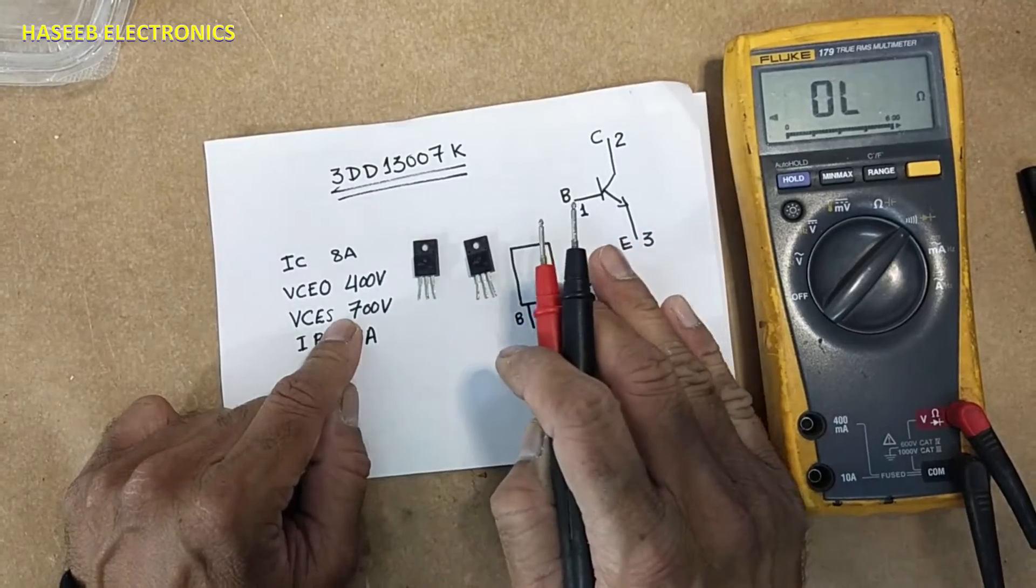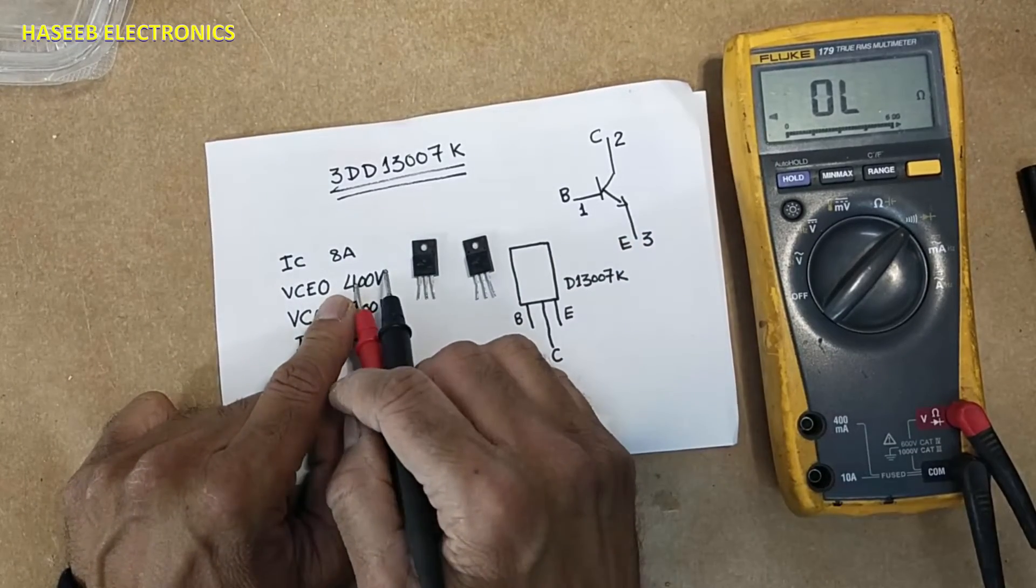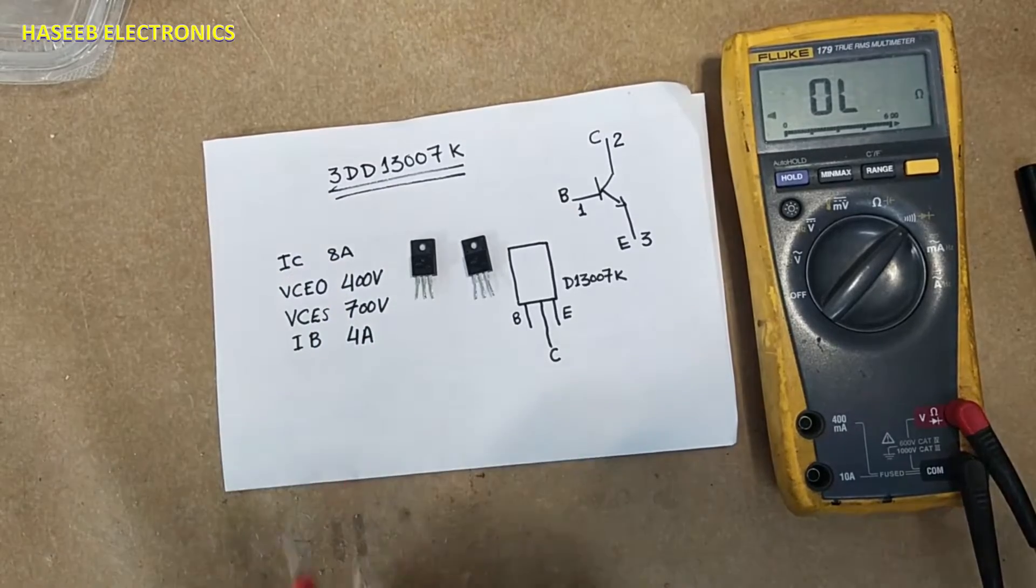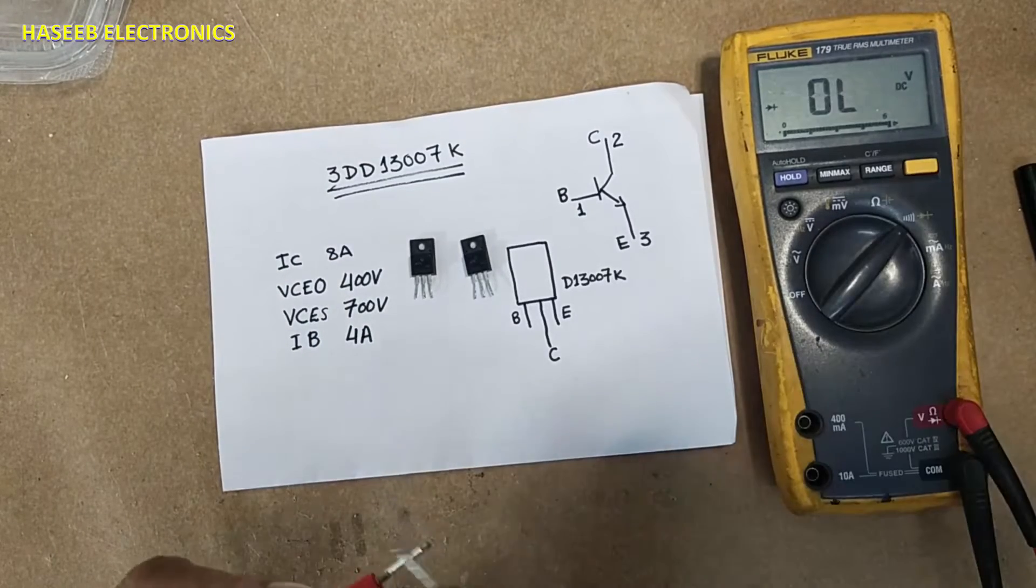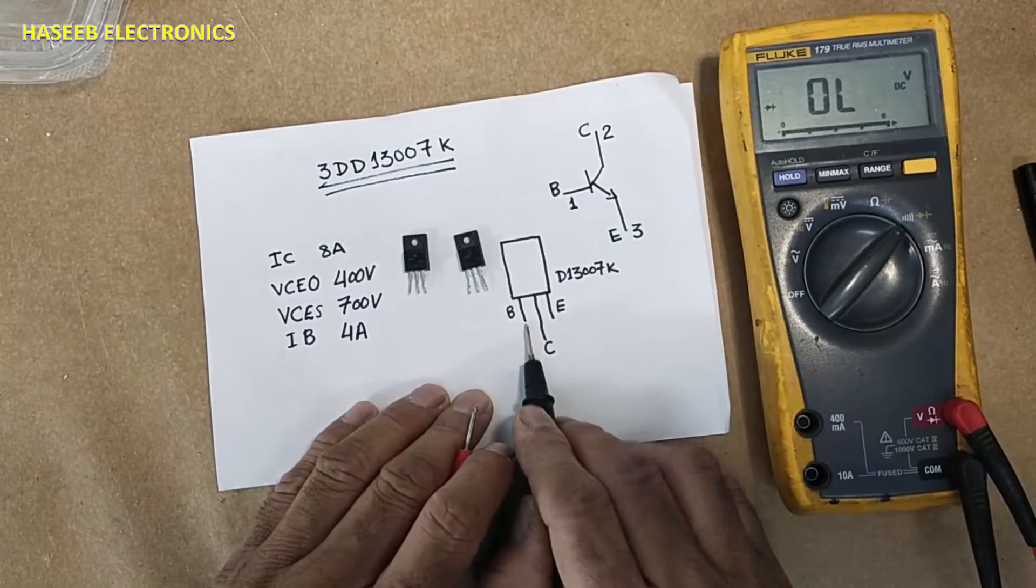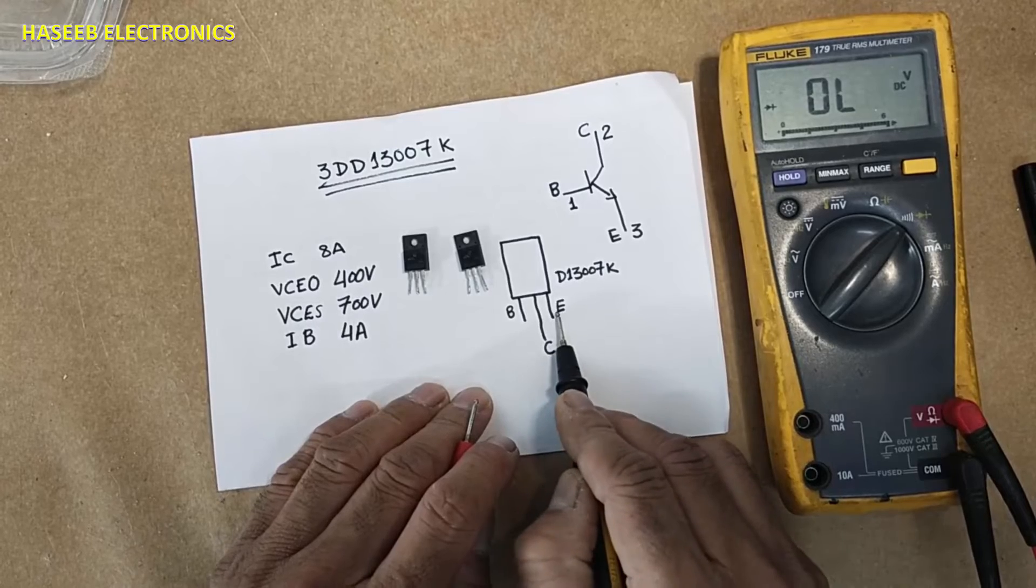Normal applied safe voltage 400 volt, base current 4 ampere, collector current 8 ampere. Set multimeter to diode. Left side base, center pin collector, right side emitter.